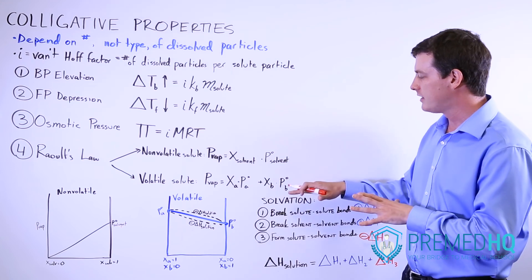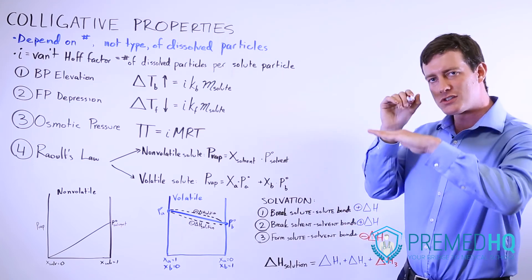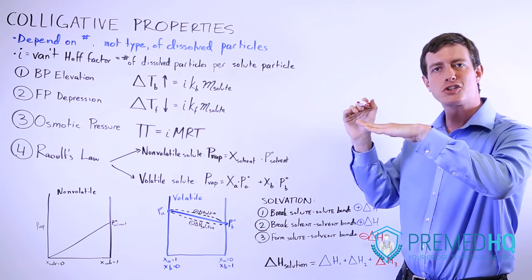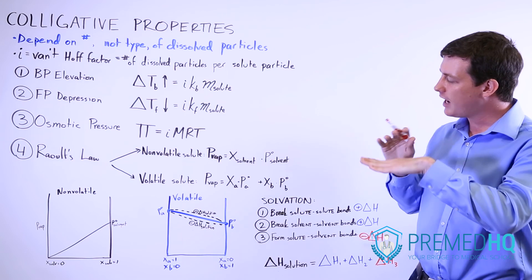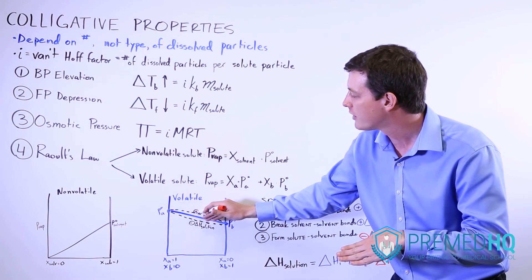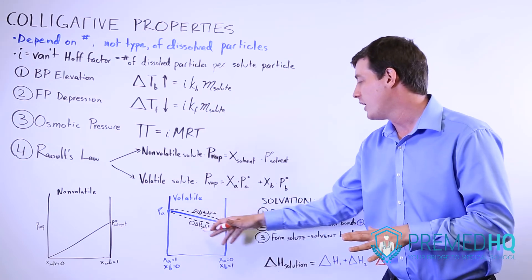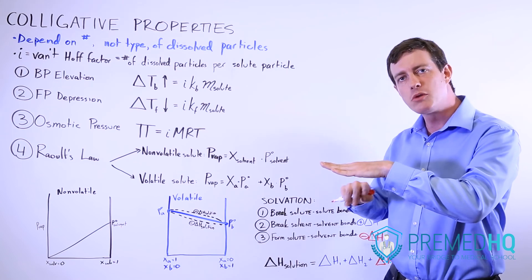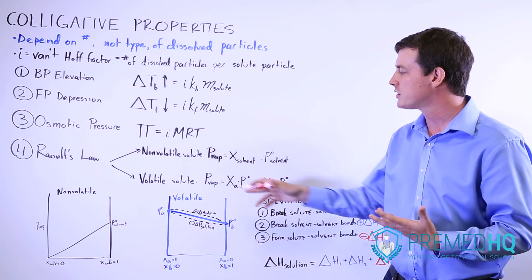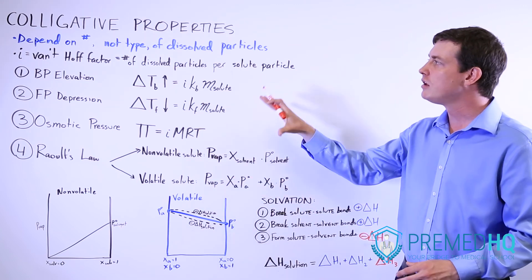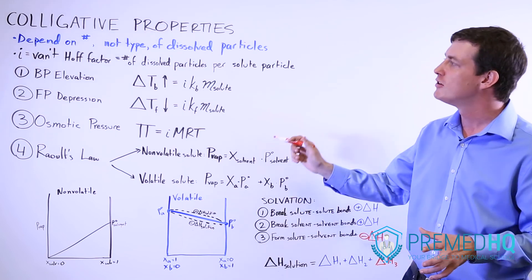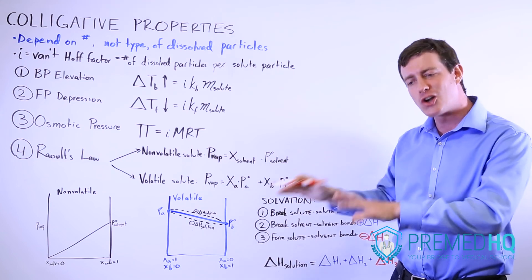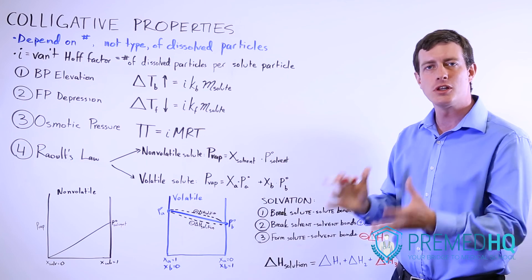Finally, if the dissolving process is endothermic, gas particles at the surface prefer not to dissolve and stay in the vapor phase, causing a positive deviation in vapor pressure. If the ΔH of solution is exothermic and favorable, those gas particles prefer the liquid phase, causing a lower vapor pressure — a negative deviation from Raoult's Law. Never forget that the Van't Hoff factor plays a big role: you must consider not just how many solute particles you have, but how many dissolved particles they create when placed in solution.